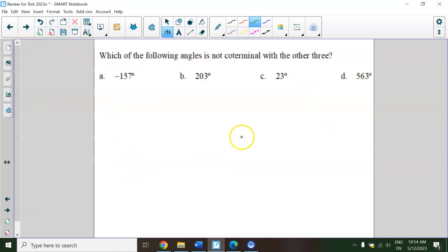This style's on the test too, so which is not coterminal with the other three. And what I would do here is just pick one, maybe even the first one, and just start adding and subtracting. So negative 157 plus 360, that's 203. So that means these two are definitely coterminal. And then let's add another 360, and we're at 563. So this one's definitely coterminal. So these three are coterminal, and this one is not.